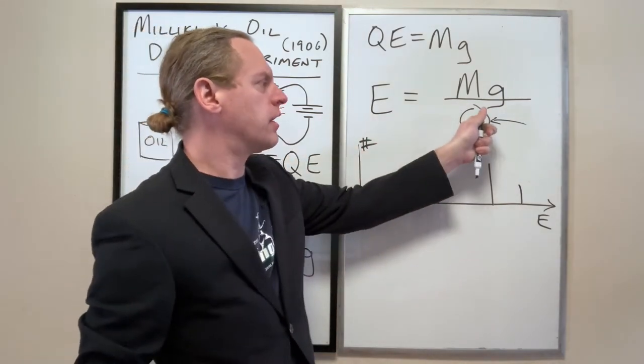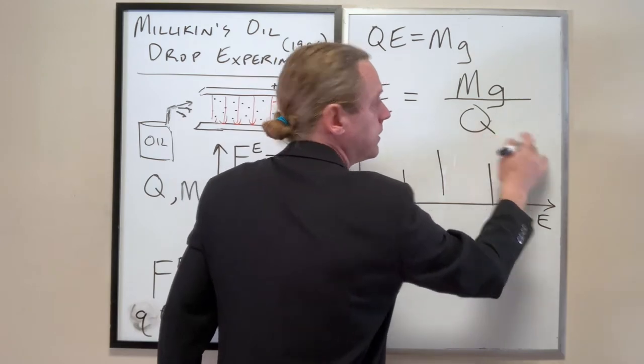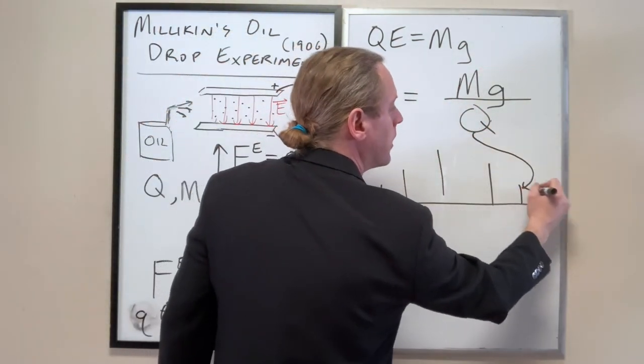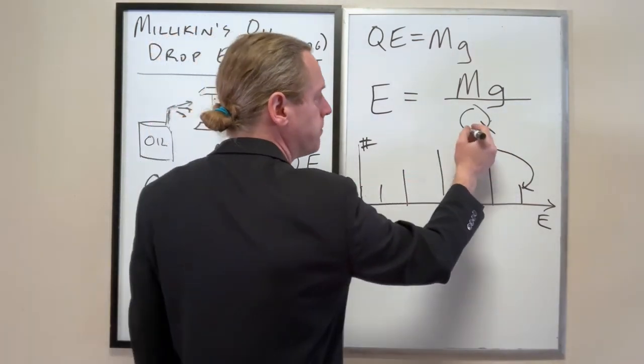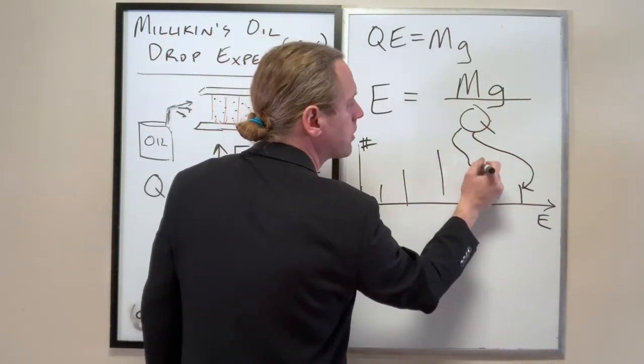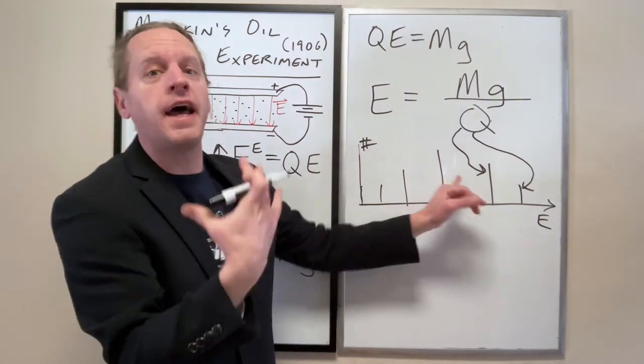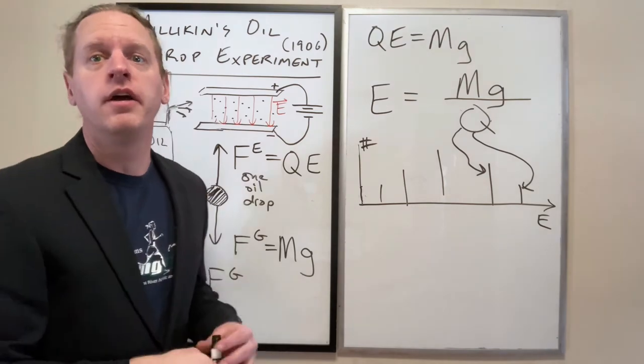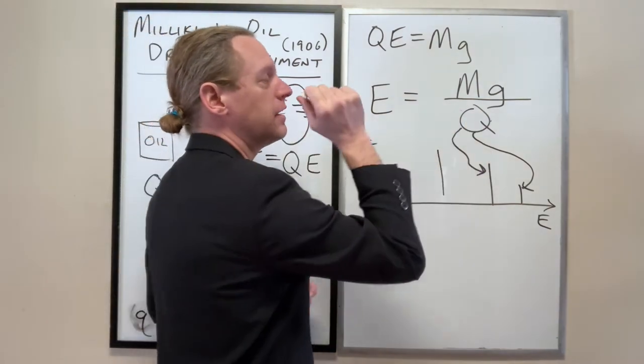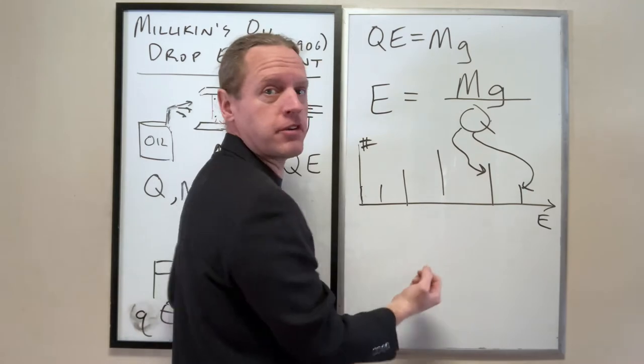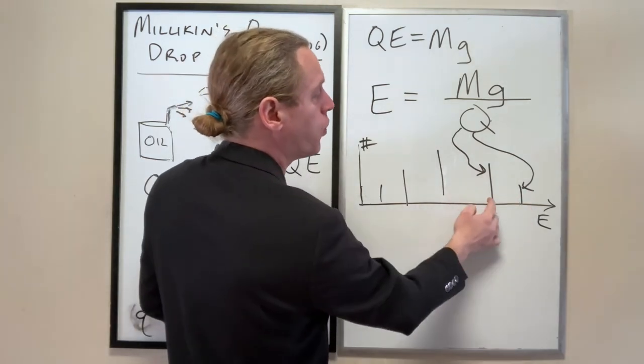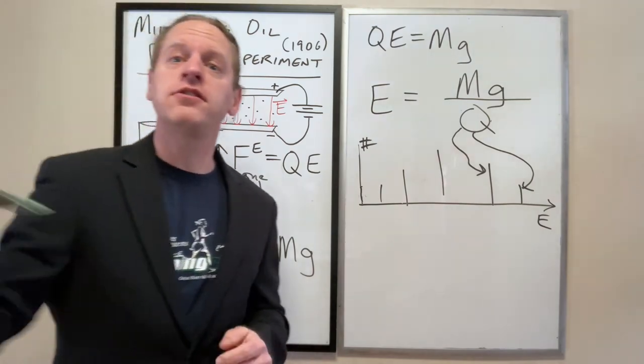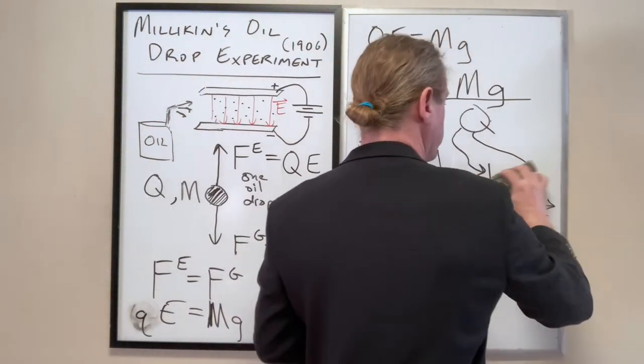If that's not true, if our graph actually ends up looking like this or something like that, what it means is that the values of Q are given in specific increments. That one certain value of Q, let's say 10 blobs, gives us this electric field. Let's say a given value of Q, 8 blobs, gives us that value of E that balances the droplets and so on. So different allowed quantized values of Q give us different quantized electric fields that balance the charge. So that's specifically what this experiment told us.